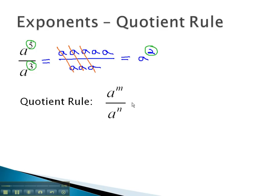This gives us the quotient rule. If we have the same base in the numerator and denominator, we will simply subtract the exponents, a to the m minus n, to simplify our expression.